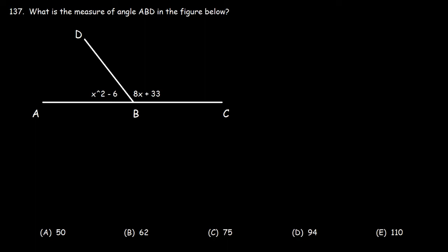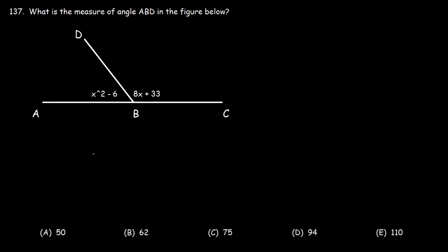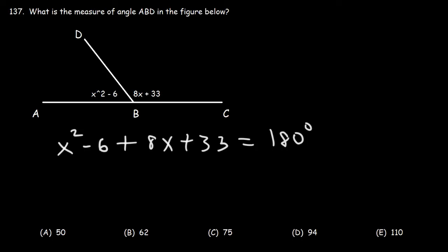Number 137: What is the measure of angle ABD in the figure below? Angle ABD and angle CBD form a linear pair because ABC is a straight line. Since these two angles form a linear pair, they are supplementary and add up to 180. So angle ABD, which is x² minus 6, plus angle CBD, which is 8x plus 33, must add up to 180.